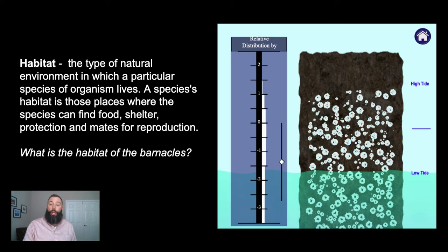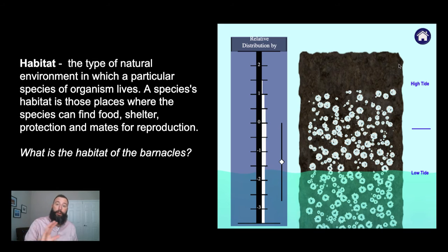The habitat is largely defined by the abiotic factors of the place, like topography, sunlight, and water availability. For example, with our barnacles, the habitat does not include the portion of the rock that is never submerged. The abiotic factor of water and where the high tide mark is absolutely determines exactly where these Thamelis barnacles are able to establish themselves.